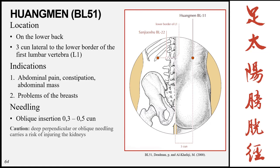The next point is Huangmen, Bladder 51, located on the lower back three cun lateral to the lower border of the first lumbar vertebra L1. Indications include abdominal pain, constipation, abdominal masses, and notably it can also be used for problems of the breasts. Needling is oblique insertion 0.3 to 0.5 cun; caution against deep perpendicular or oblique insertions as these carry a risk of injuring the kidneys, which are situated in this region.